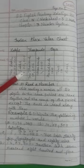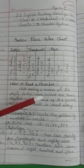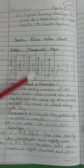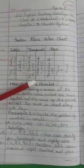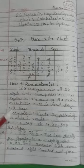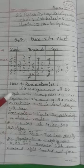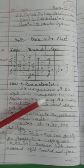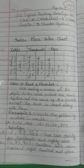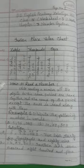Periods and place value. In the ones period, we have ones, tens and hundreds. In the thousands period, we have thousands and ten thousands. In the lakhs period, we have lakhs and ten lakhs. While reading numbers, all the digits in the same period are read together, and the name of the period except ones is read along with them.